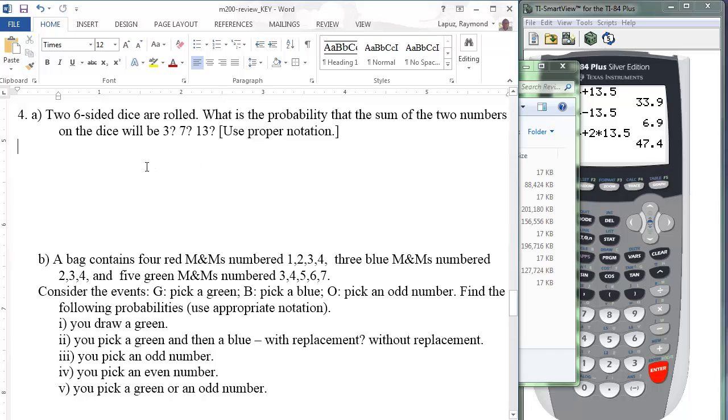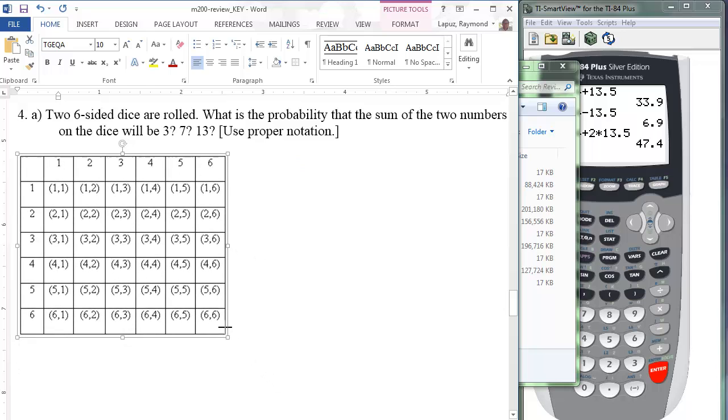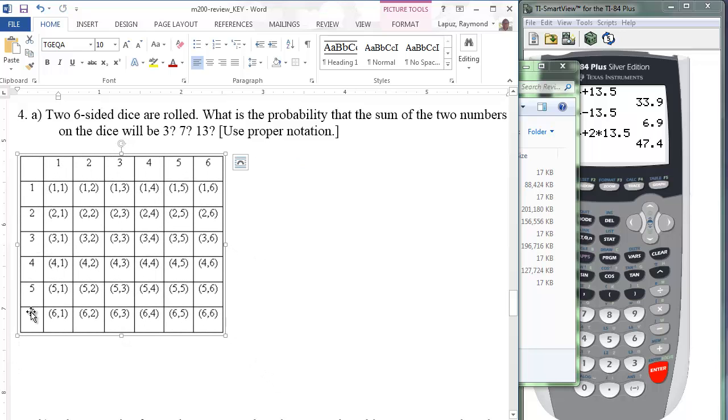For us, I think it's going to be important to find the sample space. Let's take a look at the sample space. For the first die, there's six possibilities. For the second die, there's another six possibilities. So that makes a total of 36 possibilities in all.